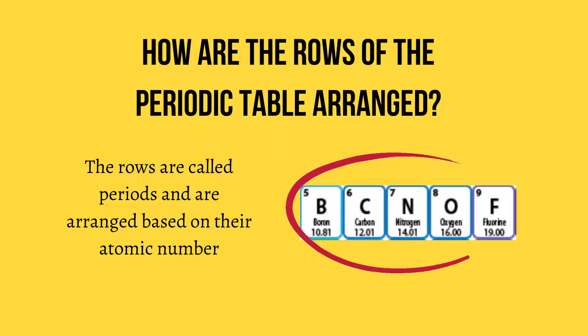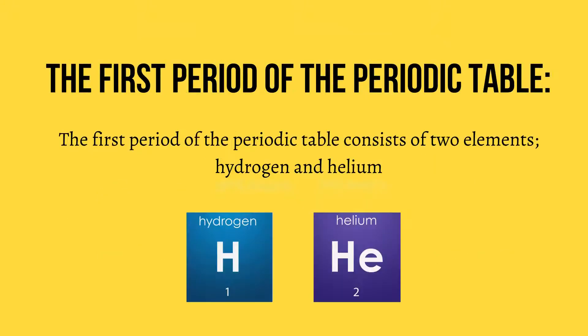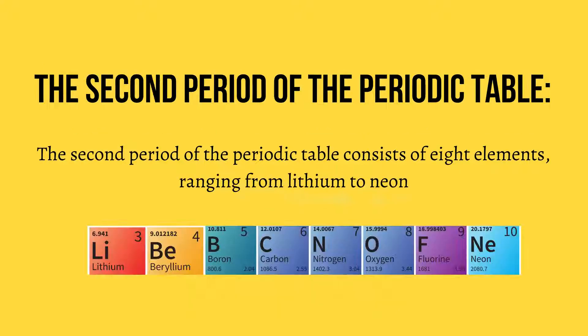How are the rows of the periodic table arranged? The rows are called periods and are arranged based on their atomic number. The first period of the periodic table consists of two elements, hydrogen and helium. The second period of the periodic table consists of eight elements, ranging from lithium to neon.